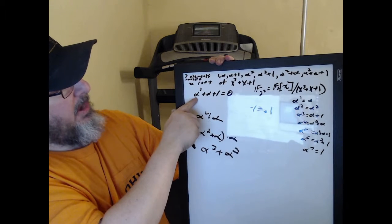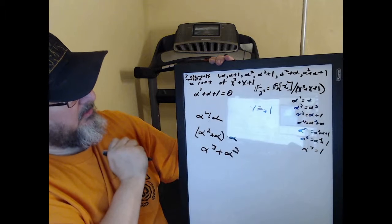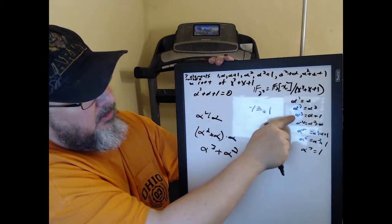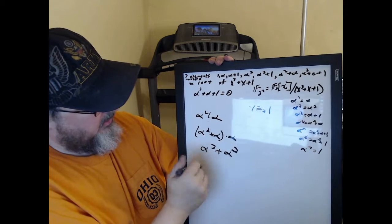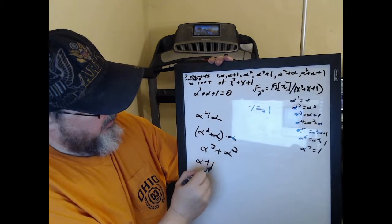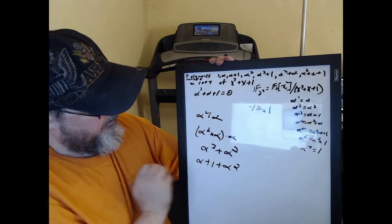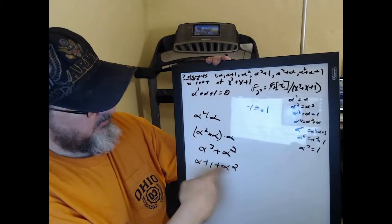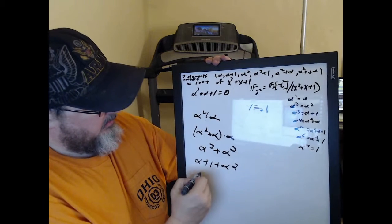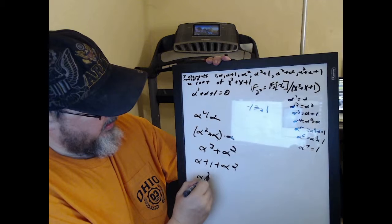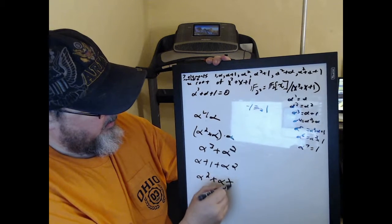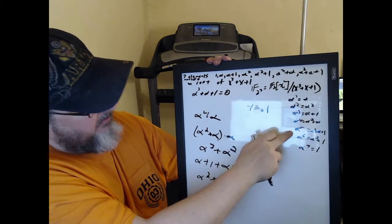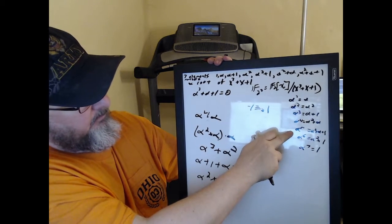Look up here: alpha to the third plus alpha plus 1 is 0, and we got alpha to the third equals alpha plus 1. This is a field, so it's commutative. So this is alpha squared plus alpha plus 1, which is alpha to the fifth. So we got that.